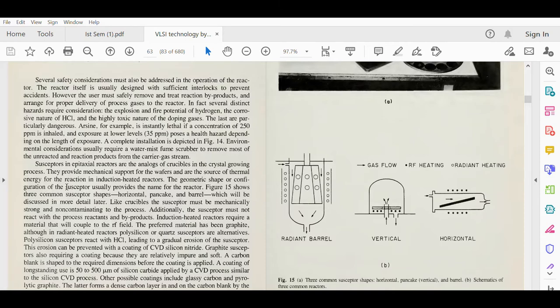Figure 15 shows three common susceptor shapes: horizontal pancake, vertical, and radiant barrel, which will be discussed in more detail.